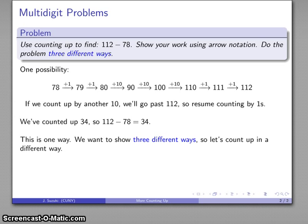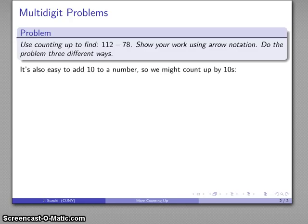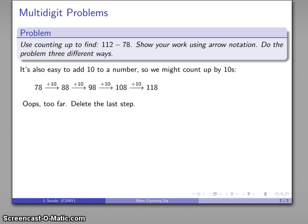On the other hand, if you know a little bit more, there's several things that we can do. For example, we might consider that it's always easy to add 10 to a number, so I might just count up by 10s from 78. So, I might start at 78, and 10 gets me to 88, and 10 gets me to 98, and 10, and 10, and 10, oh wait, that's too far. I only want to get to 112, so I went a little bit too far, so let's get rid of this last step.